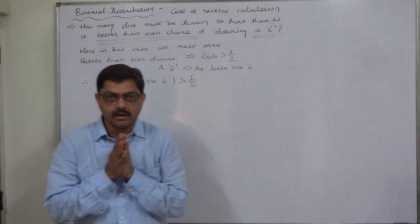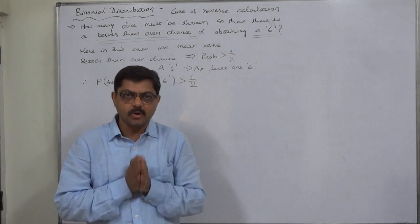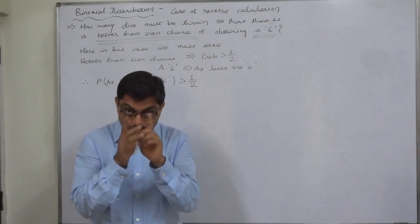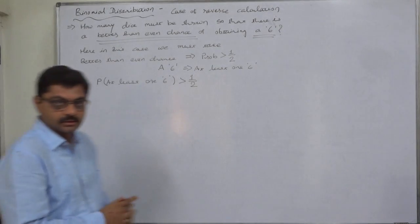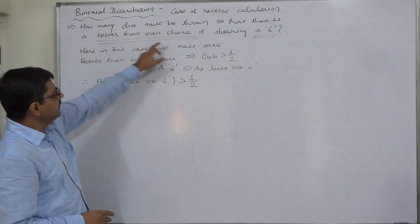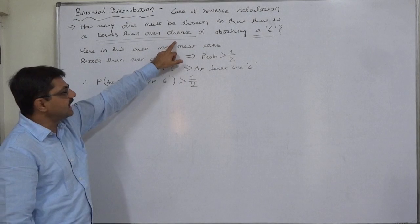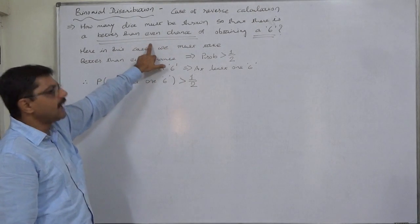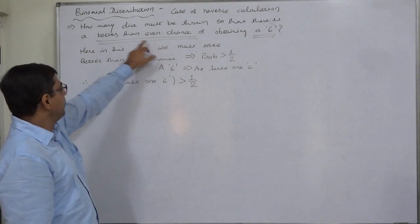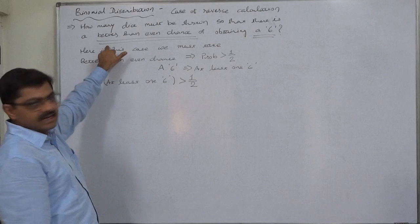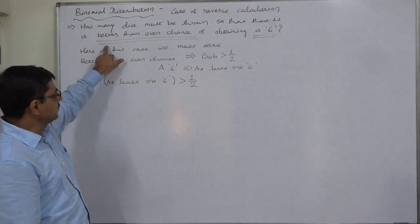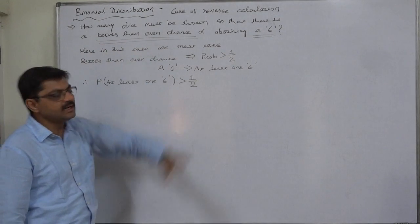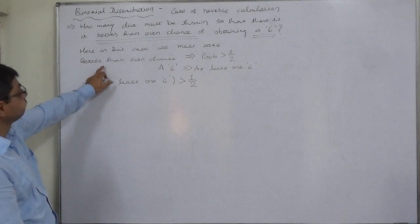Even means equal. In the context of probability, equal means 0.5. This should be the interpretation. So, 'better than even chance' — chance means probability, even means half, and better means greater than. So the interpretation is: the probability is greater than half, or 0.5.